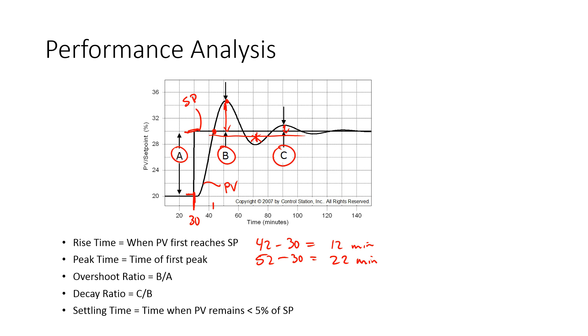Overshoot ratio is just B, this first amount that I overshot the set point, divided by this total set point change, which is A. That's going to be the overshoot ratio. In this case, it gets about up to 34, 34.5 minus 30, and I'm going to divide that by 30 minus 20, so about 10. I've got about 4.5 divided by 10, or about 0.45. Sometimes we say 45% overshoot.